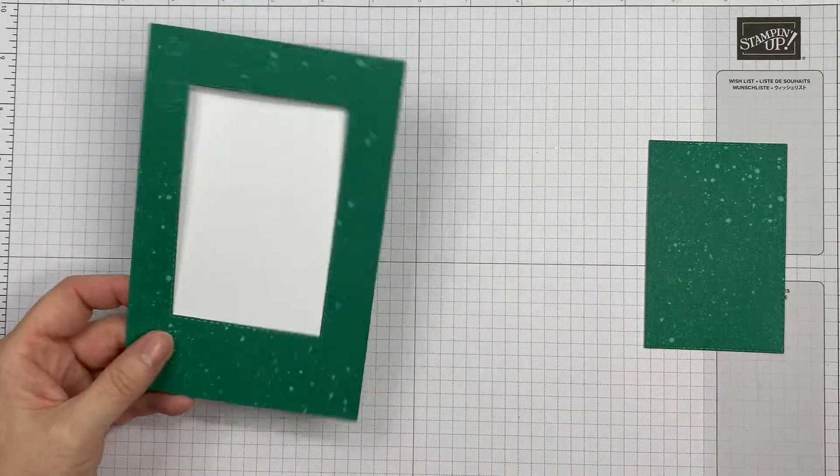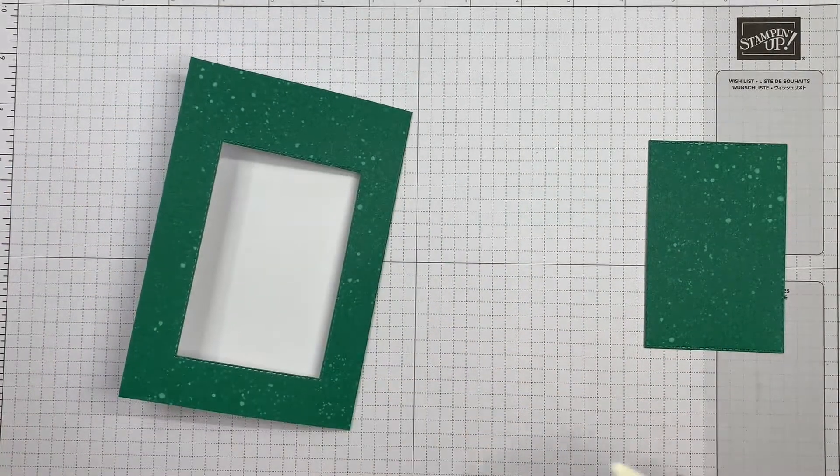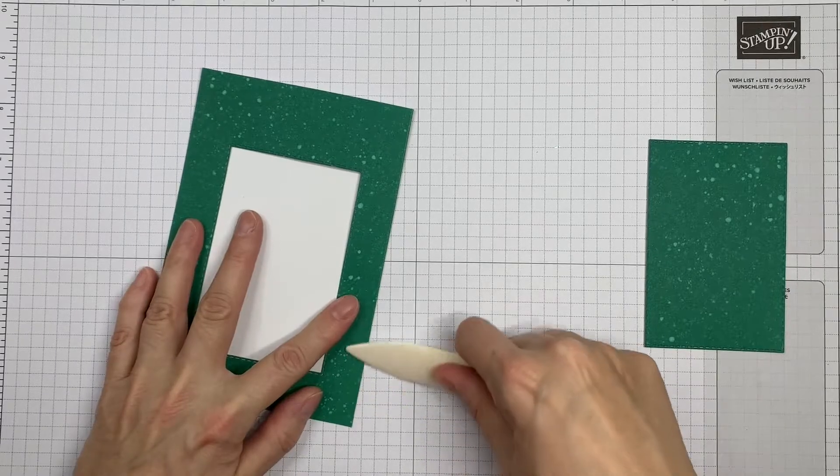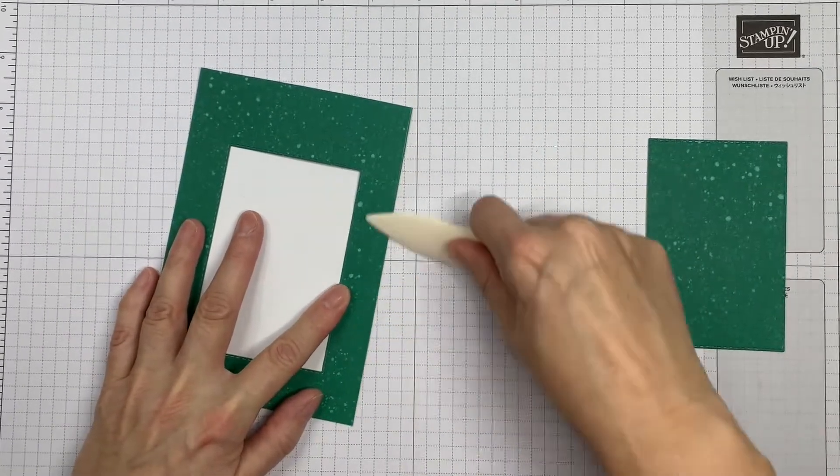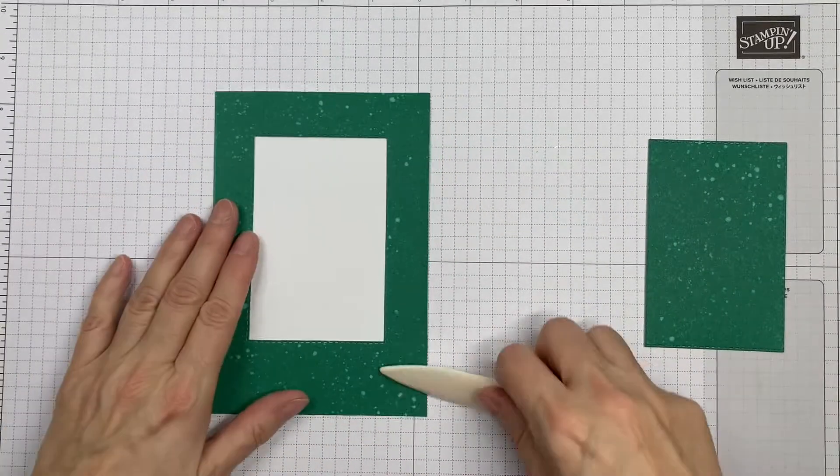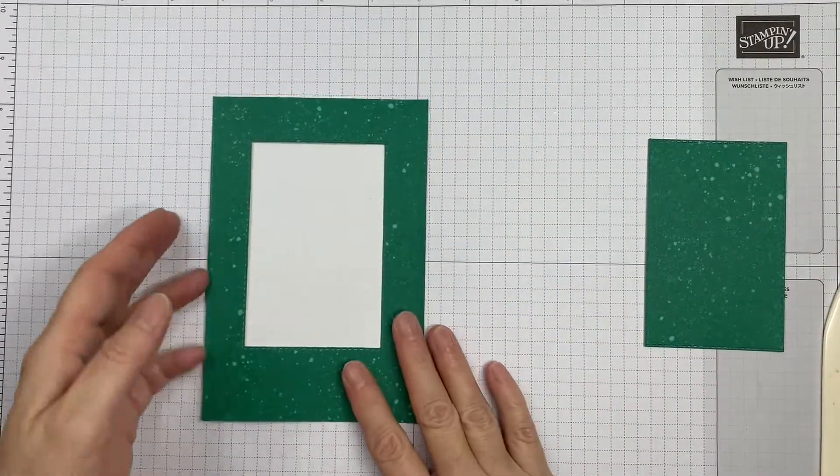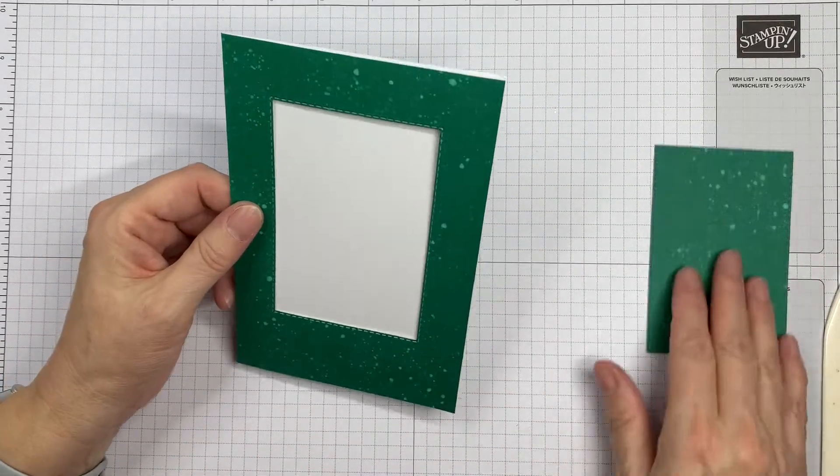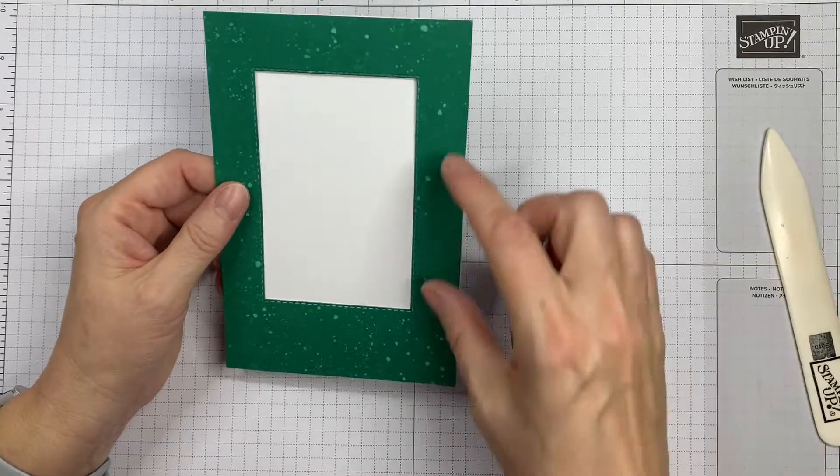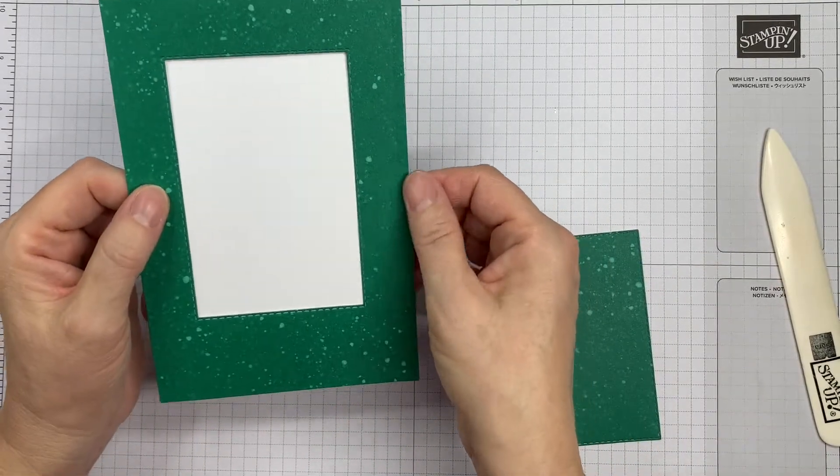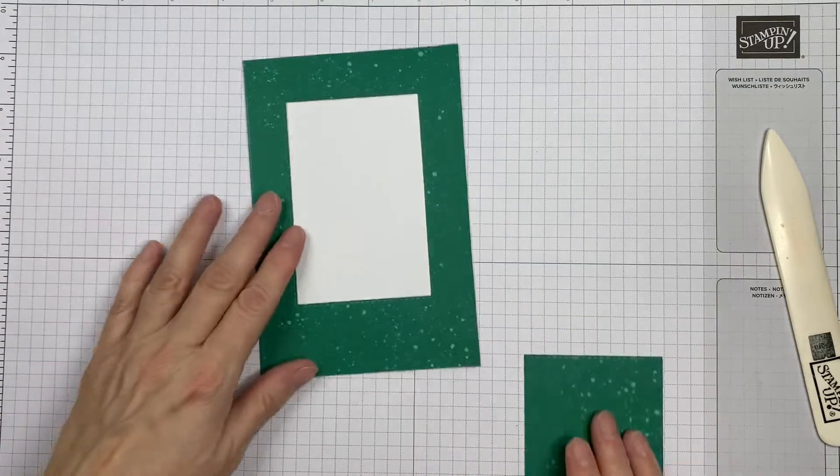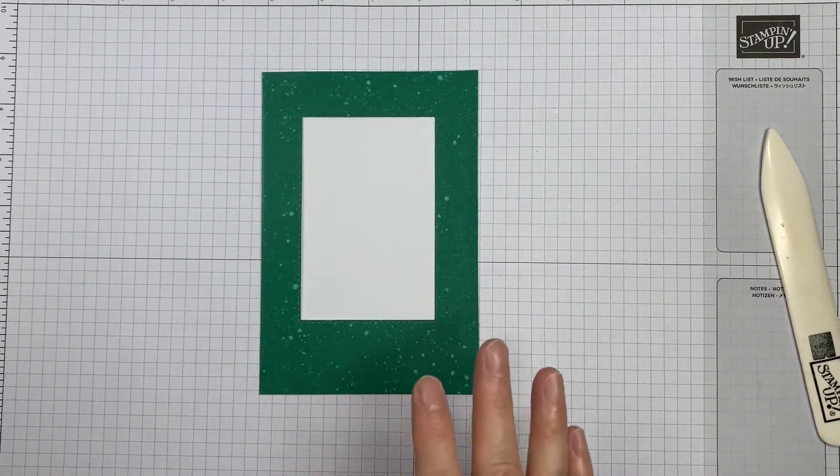So this has made us a window card in our pre-printed card, and I'm just giving that a nice firm press down with the bone folder. It has left a tiny indent because I was perhaps a bit close to the edge, but you can't see it too much.